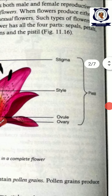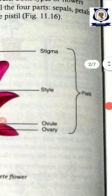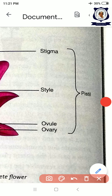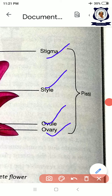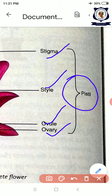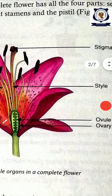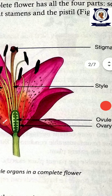What is called a pistil? The pistil is the female reproductive organ. It contains the ovary, ovule, style, and stigma. The ovary, ovule, style, and stigma together form the pistil. The pistil is the female reproductive organ.